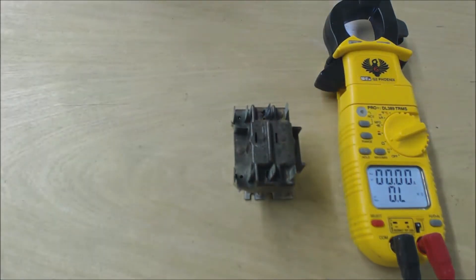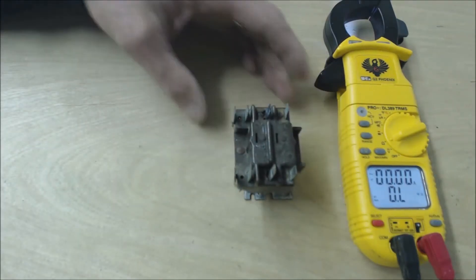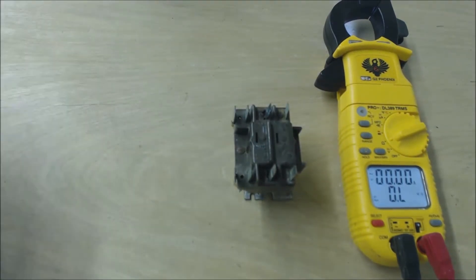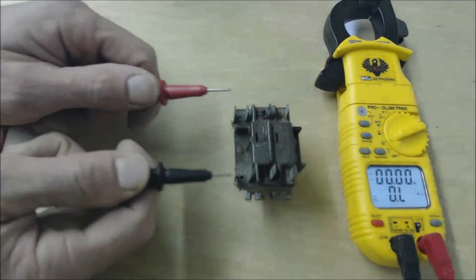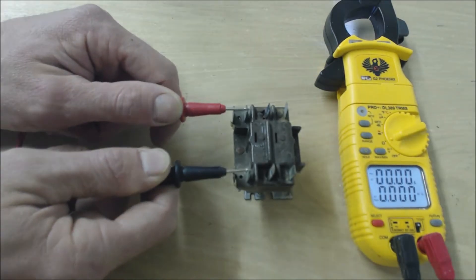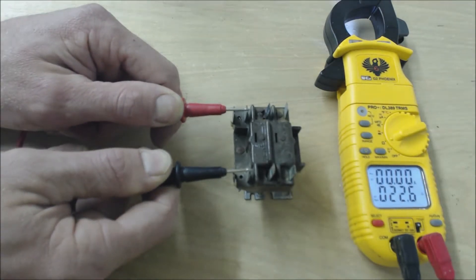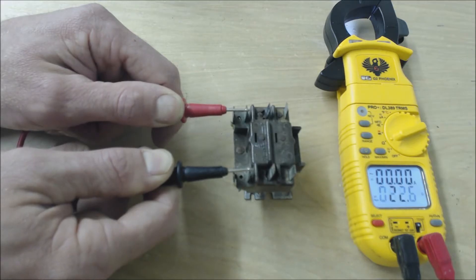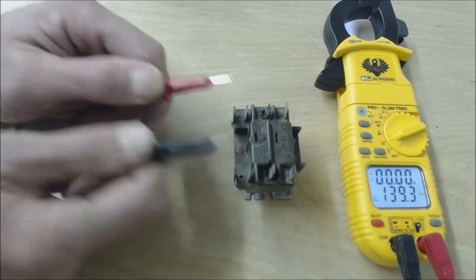First, the relay is disconnected and it's not powered, so what we're going to do is read resistance on the coil. The coil says 22.6 ohms of resistance.